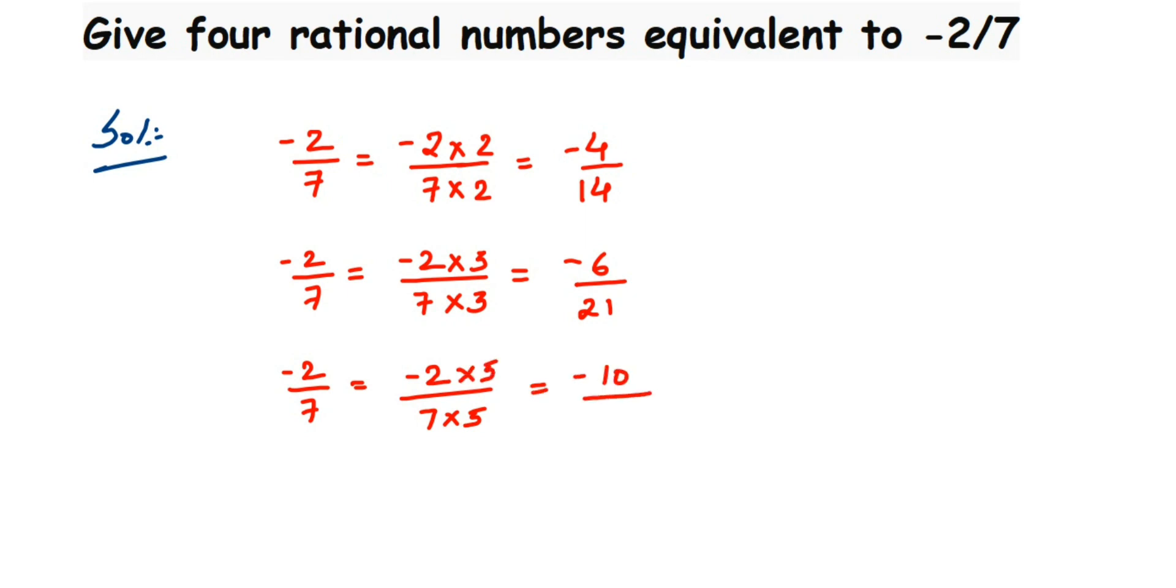Let me take here 10, the next number. So minus 2 by 7 equivalent to minus 2 by 7. I am going to multiply here with 10 in the numerator and denominator. This is equal to minus 20 by 70.